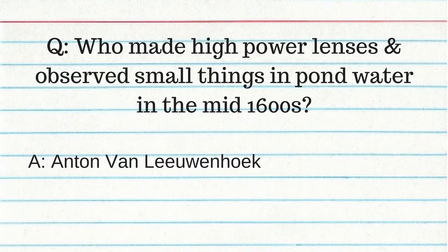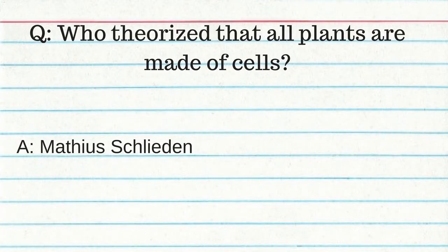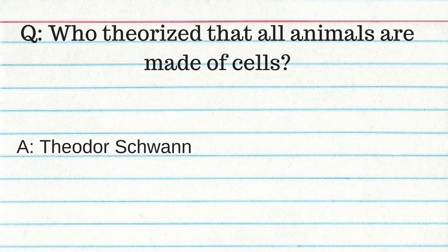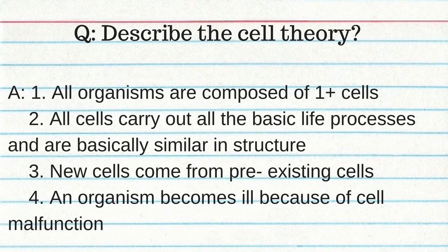Anton van Leeuwenhoek made high-power lenses and observed small things in pond water in the mid-1600s. Robert Hooke observed cork under compound microscopes and named the box-like structures he saw 'cells.' Matthias Schleiden theorized all plants are made of cells. Theodor Schwann theorized all animals are made of cells. Rudolf Virchow theorized that cells arise from pre-existing cells. The cell theory states: all organisms are composed of cells; all cells carry out the same basic life processes; new cells come from pre-existing cells; and an organism becomes ill because of cell malfunction.